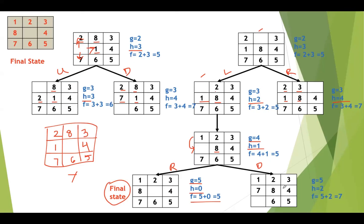For the downward state: 1, 2, 3 in right positions, but 7 misplaced and 8 misplaced — 2 misplaced tiles, f value is 7. Since we already reached the final state in the other branch, no need to consider this one. This is how we solve the 8-puzzle problem using the A* algorithm.